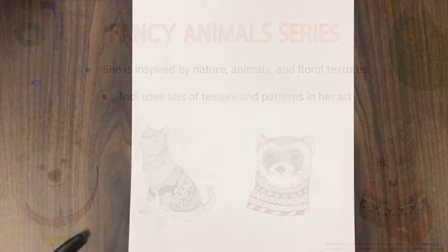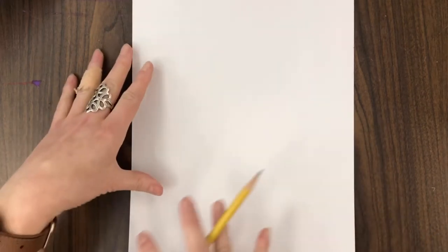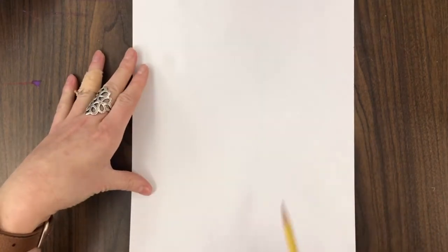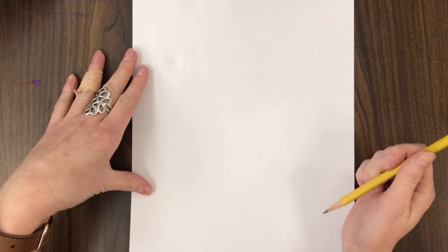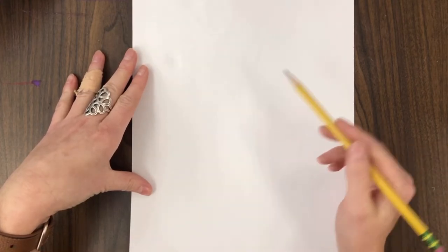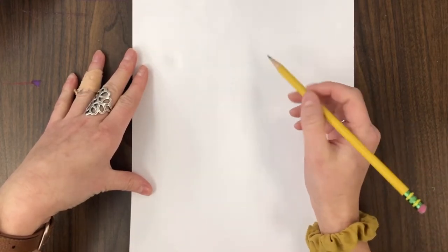I'm going to draw a little bear wearing a sweater just like her Fancy Animals series. We're going to need a paper, pencil, and Sharpie. When we are drawing today we're going to be sketching because we are going to do some erasing, so make sure you're pressing lightly with your pencil.